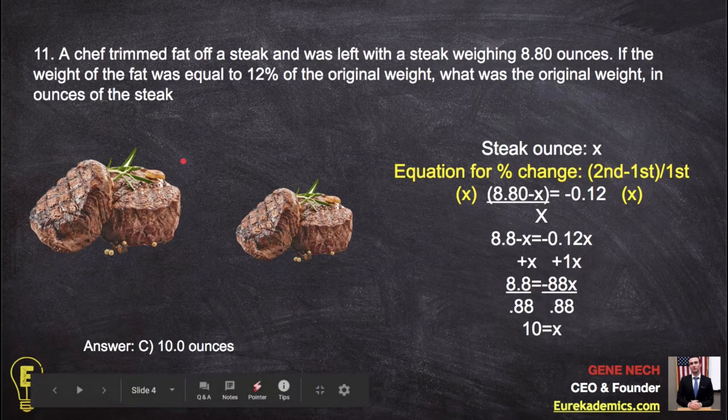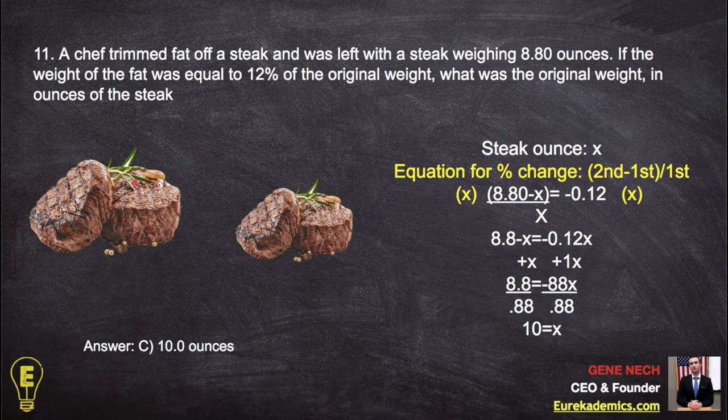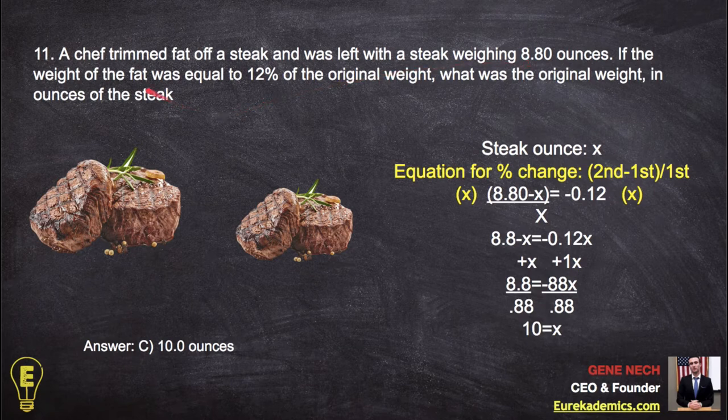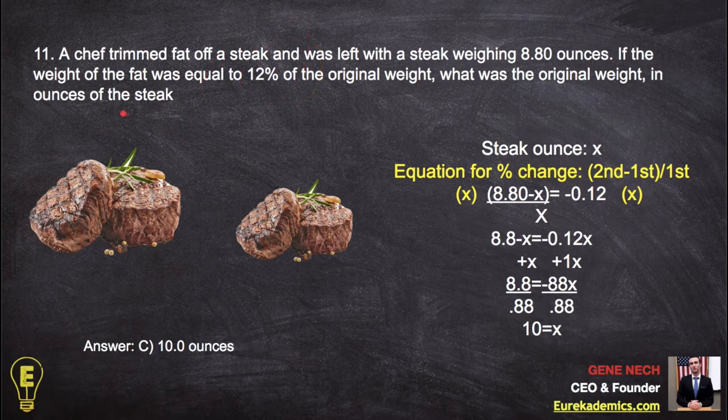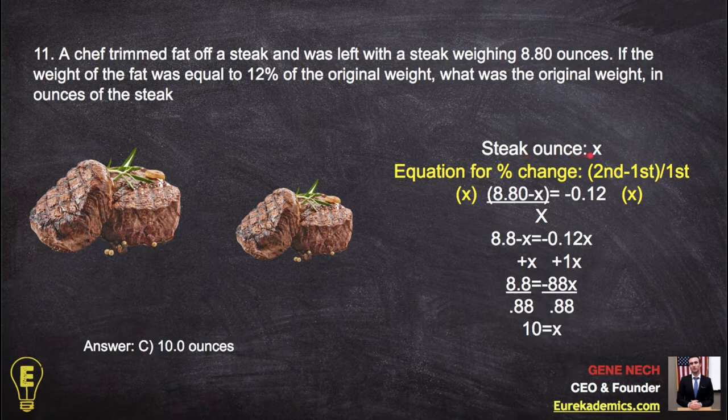Number eleven. So a chef trimmed off the fat of a steak and was left with a steak weighing 8.8 ounces. So steak, it lost a percentage, it lost some percent, maybe 10, 20, 30, I don't know. And now it's 8.8 ounces. If the weight of the fat, which is the thing it lost, was equal to 12% of the original weight, what was the original weight in ounces of steak? So we don't know what this is, so you call it x. Steak, original ounce, x.